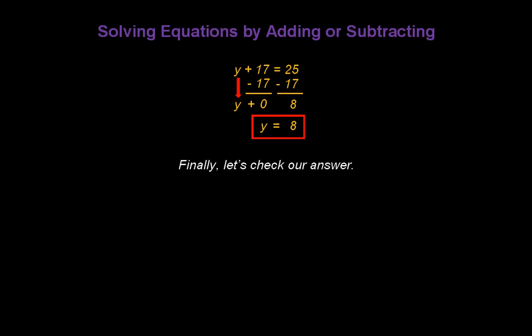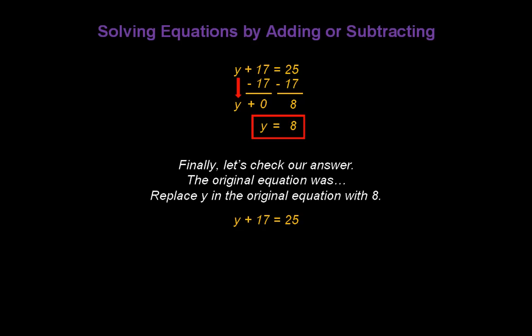Now if we want to make sure our answer is correct, we can check it. The original equation was y plus 17 equals 25. All we have to do is replace y with our answer, 8, and ask ourselves: is 8 plus 17 equal to 25? And sure enough, we know 8 plus 17 is 25. If both sides equal, that makes our answer correct — y has to be 8.